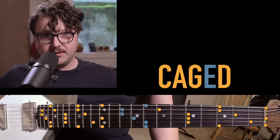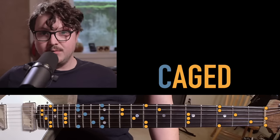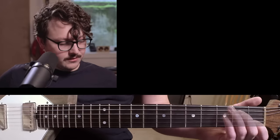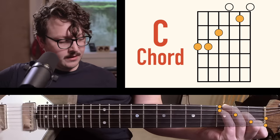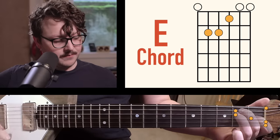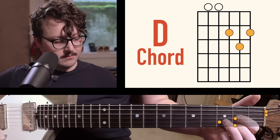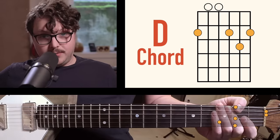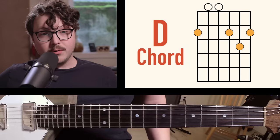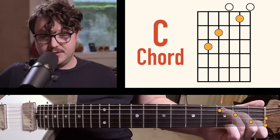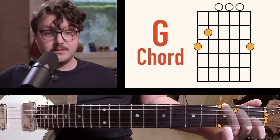Before we start on the actual CAGED system, I want to talk about the chord shapes: C, A, G, E, and D. If you're a guitar player, when you think of a C chord, you think of a shape. When you think of a G chord, you think of this shape. But this is really specific to guitar.